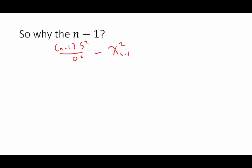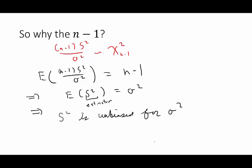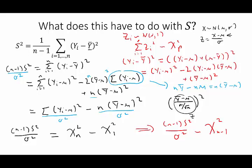Using facts from a previous slide, the expected value of (n-1)s²/σ² equals n minus 1. Simplifying, we get the expected value of s² equals sigma squared. Recall from an earlier video that when an estimator's expected value equals the quantity it's estimating, that estimator is unbiased for sigma squared — isn't that cool! In the next video we'll cover 2D transformations, and part of that will be showing that s² and the chi-squared with 1 degree of freedom are independent. Keep that in mind; we'll come back to it. Hope you enjoyed this first video.